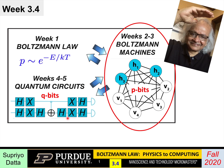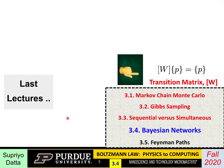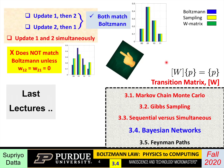Welcome back to week three of our course, Boltzmann Law, Physics to Computing. This is the fourth lecture for this week. This week we started by defining the transition matrix and showing how you could get the stationary probability distribution from that matrix. Then we spent the next two lectures talking about this sampling technique, writing down the transition matrix, and discussing why certain updating sequences work, whereas simultaneous updating doesn't work if the nodes are connected.